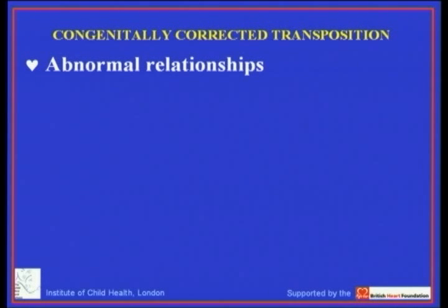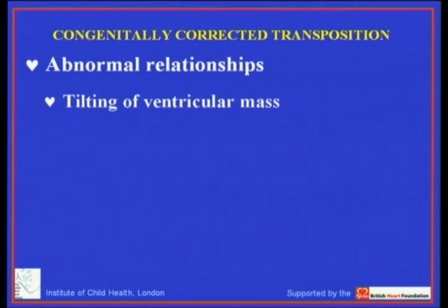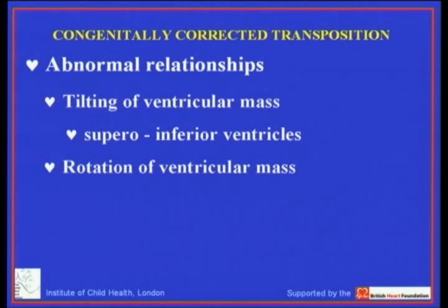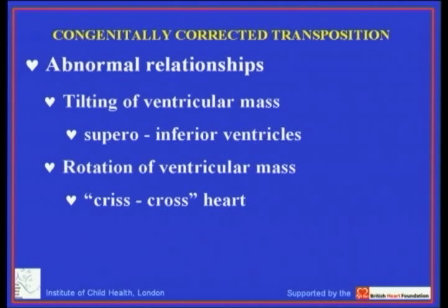Abnormal relationships can further distort the anatomy in congenitally corrected transposition. There is often marked tilting of the ventricular mass, described as supero-inferior ventricles. Rotation of the ventricular mass was historically confusing but is now recognized and diagnosed as the criss-cross heart.